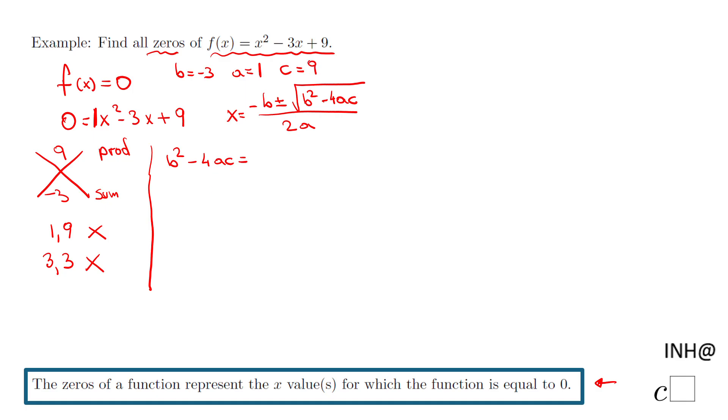We're going to plug this into the formula and we have (-3)² - 4(1)(9). We have positive 9 because -3 × -3 is positive 9, minus 4 × 1 is 4 × 9, which is 36. 9 - 36 is -27.